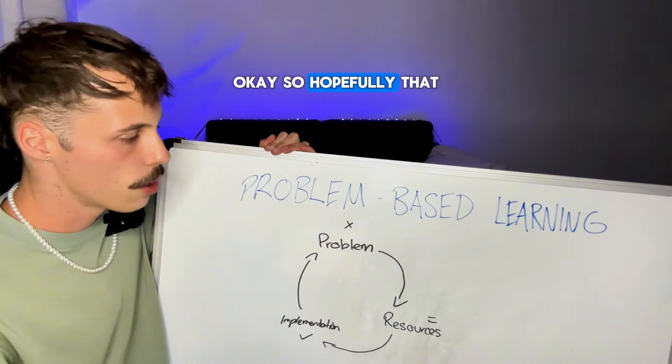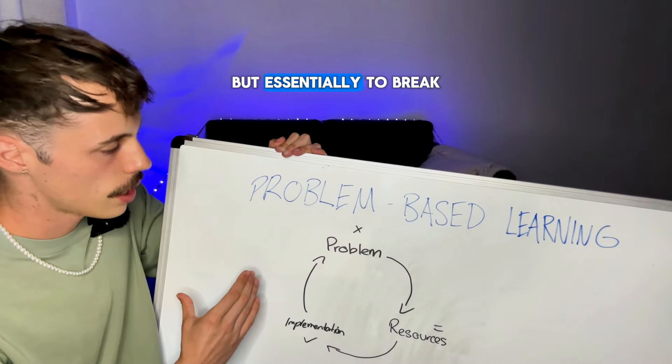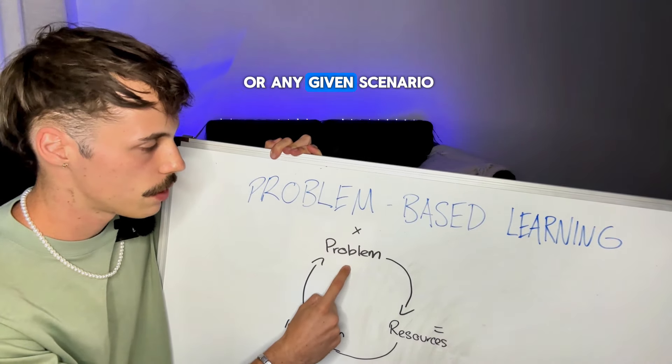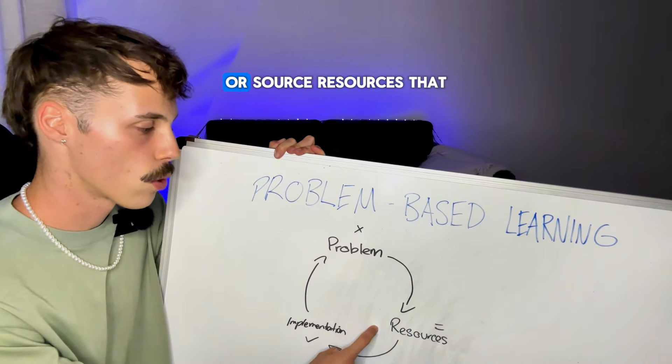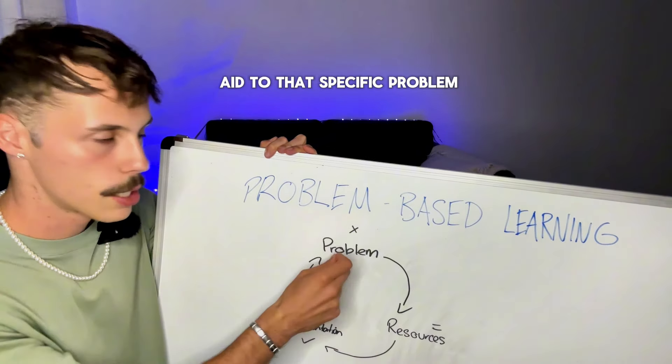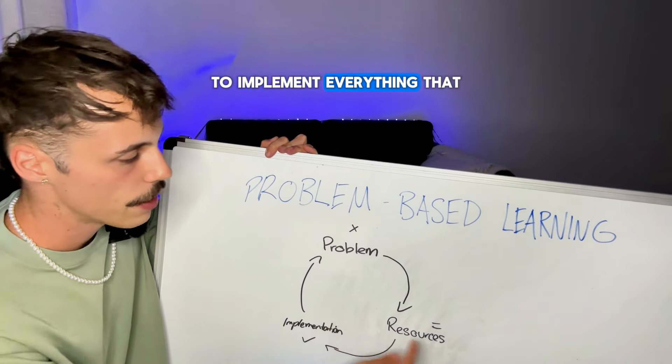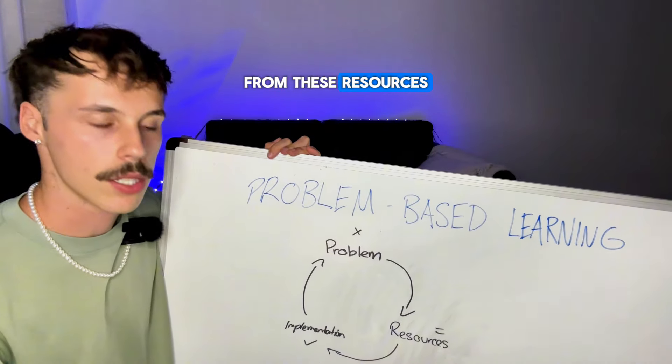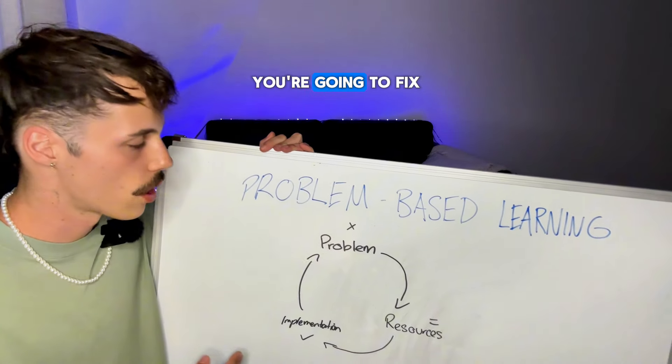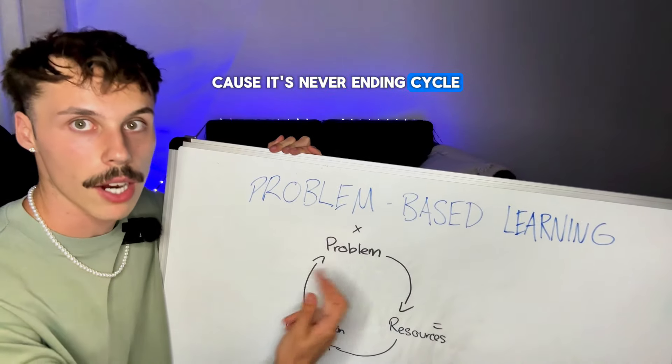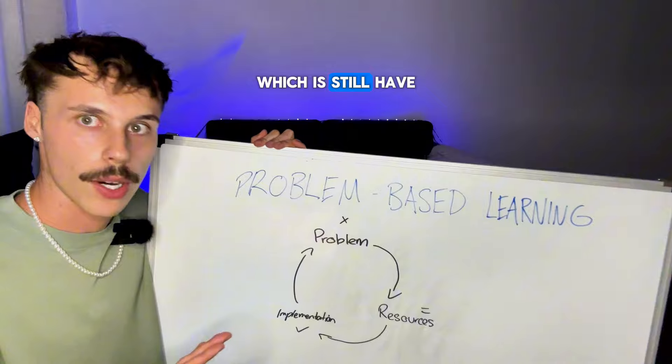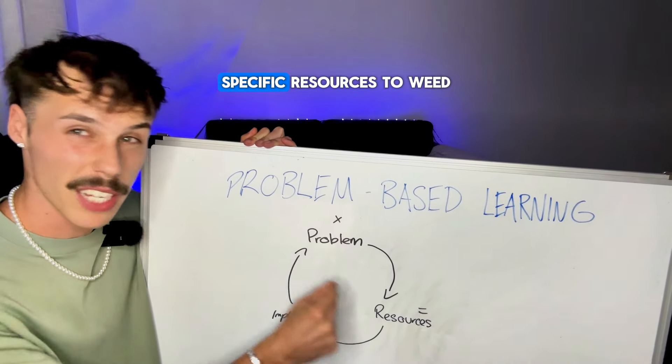So hopefully that clears up the process but essentially to break it down and simplify it, you're identifying a problem in any given field or any given scenario. You're gonna find resources or source resources that would herald a solution or a fix or an aid to that specific problem. You're then going to implement everything that you found from these resources and actually do the work, actually implement it and you're either gonna fix that problem and then move on to the next problem because it's a never-ending cycle if you wanna level up or two, it's not gonna fix your problem and you're gonna be at square one which is you still have the same problem and you're gonna have to find more resources, specific resources to weed them out.